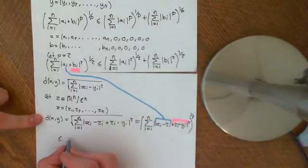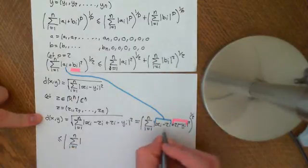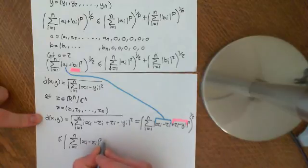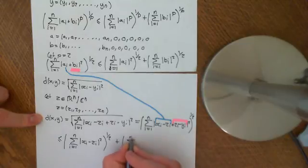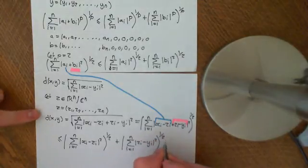So then we get that this is less than or equal to the summation i equals 1 to n of the modulus of aᵢ, which is the modulus of (xᵢ - zᵢ), squared to the power of a half, plus the summation i equals 1 to n of the modulus of (zᵢ - yᵢ) squared to the power of a half. OK.